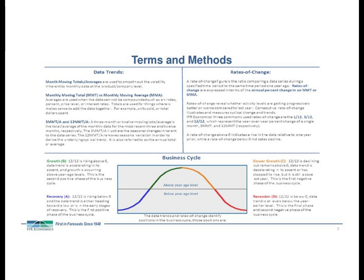Once that 12-12 peaks and starts to decline, we've transitioned to Phase C, slowing growth — what I consider the cautionary phase of the business cycle. Things are still good: sales are still up, you're still making money, people are getting raises. However, the rate of growth is slowing on a monthly basis. Phase C is cautionary because this is when some serious managerial decisions have to be made.